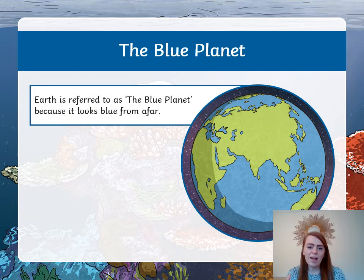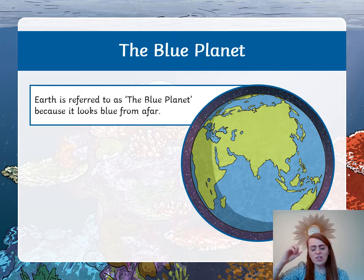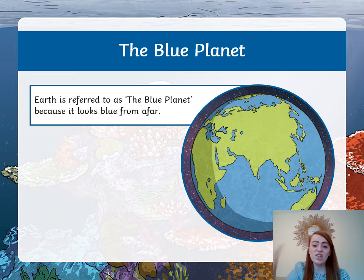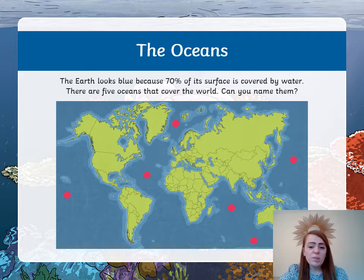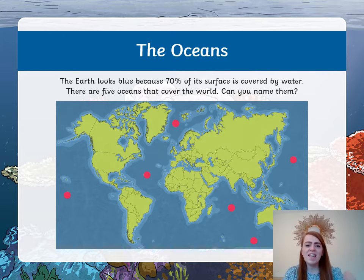So, the blue planet. Earth is referred to as the blue planet because it looks blue from afar. There's actually a really famous photo that one of the astronauts took from up in the space station looking down on Earth, and it just looks like a blue dot because it's covered in water. The Earth looks blue because, as we know, 70% of its surface is covered by water. And we know the five oceans — boys and girls, we already have a lot of prior knowledge about this subject, and we're really taking this week to deepen our understanding.